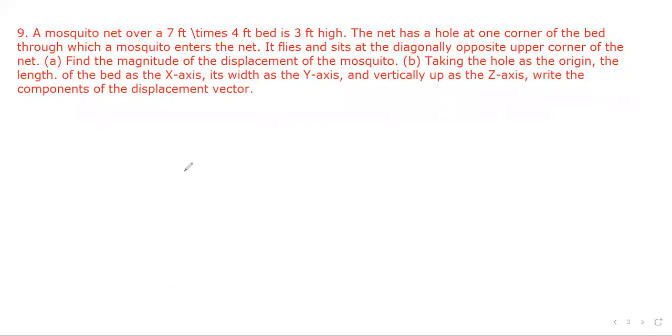Now let's see next question. Here a mosquito net over 7 feet by 4 feet by 3 feet high bed. The net has a hole at one corner of the bed through which mosquito enters the net. It flies and sits at the diagonally opposite upper corner of the net. Find the magnitude of the displacement of the mosquito. Taking the hole as origin, length along x-axis, width along y-axis, and vertically up as z-axis. Write the components of the displacement vector.